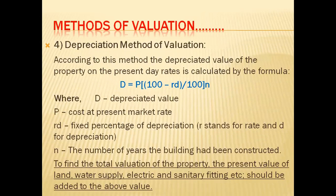The last method is the depreciation method. In this method, we get our value every year reduced. For example, if a building is worth 50,000,000 now, every year it will not remain 50,000,000 — its value will decrease. This is what we learn in the depreciation methods. The depreciation formula is: Present Value = P × (100 − rd/100)^n, where rd is the fixed percentage of depreciation per year (e.g., 3%, 4%, 5%) and n is the number of years.